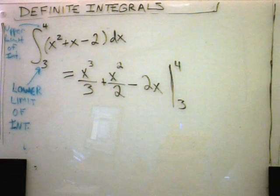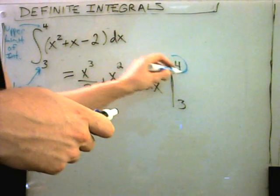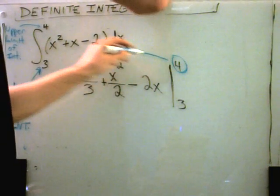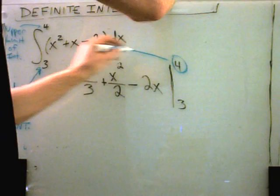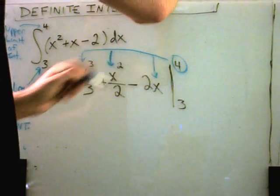So the first thing you do is, everywhere you have a variable, you take your upper limit of integration and you plug it in. So I plug it in here, here, and here.